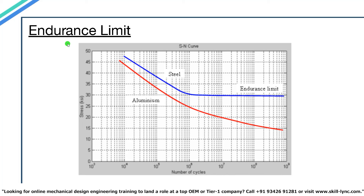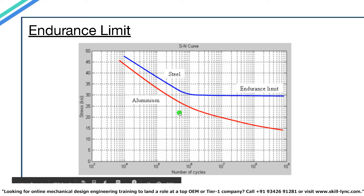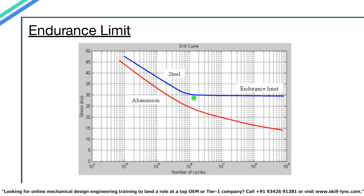For some materials, especially ferrous metals, the SN curve becomes flat at lower stress values — this is known as the endurance limit. Theoretically, the component can be cycled at this stress value for an infinite number of times and will never undergo fatigue failure. We can see that the SN curve for aluminium does not flatten out, whereas the SN curve for steel starts to flatten at around 30 ksi — meaning that stress level can theoretically endure almost infinite life cycles.